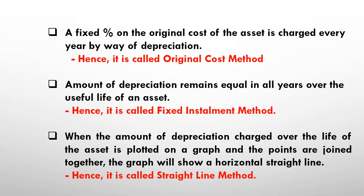In this method, a fixed percentage on the original cost of the asset is charged every year by way of depreciation — hence it is called the original cost method. The amount of depreciation remains equal in all years over the useful life of an asset, hence it is called the fixed installment method.